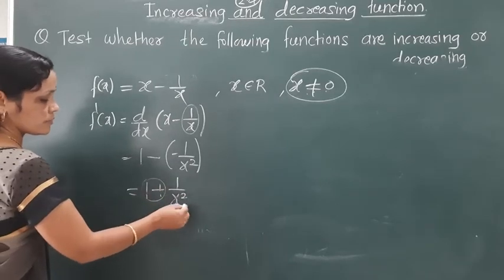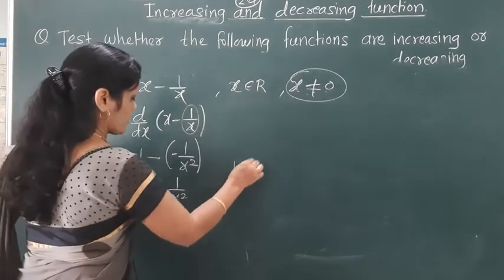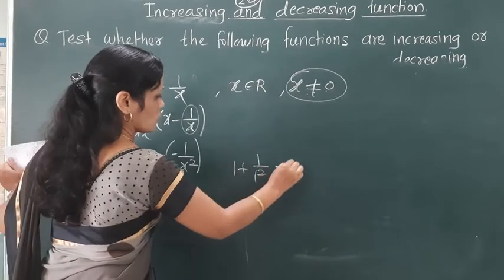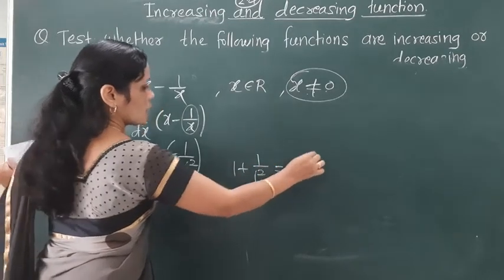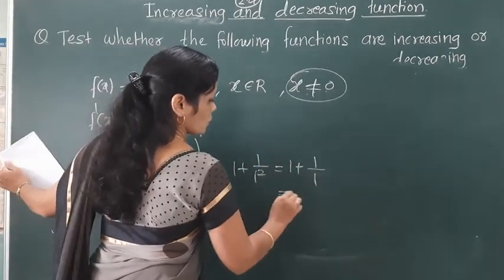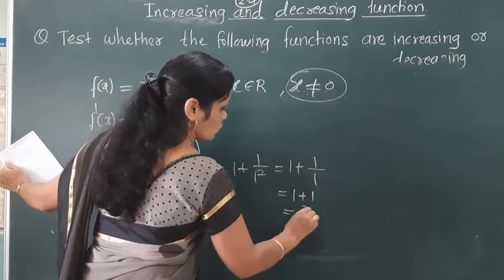For example, substituting x = 1: f'(1) = 1 + 1/(1²) = 1 + 1 = 2, which is a positive value.